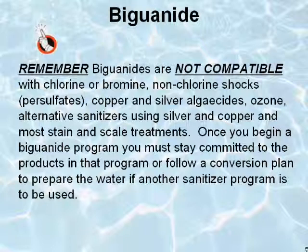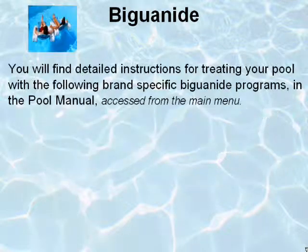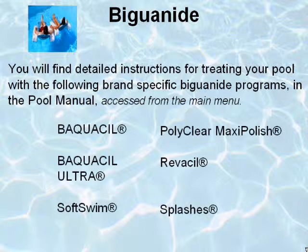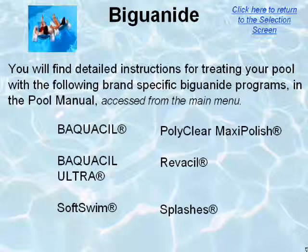Once you begin a biguanide program, you must stay committed to the products in that program, or follow a conversion plan to prepare the water if another sanitizer program is to be used. You will find detailed instructions for treating your pool with brand-specific biguanide programs in the pool manual, accessed from the main menu.